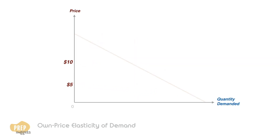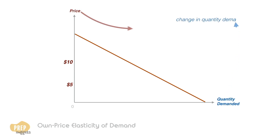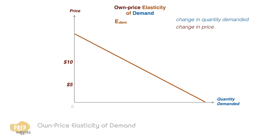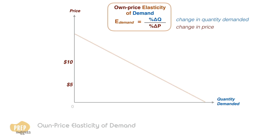Here we introduce a measure to describe the change in quantity demanded when the price changes. The own price elasticity of demand is the percentage change in quantity demanded when the price changes by 1%. When the demand curve is downward sloping, the own price elasticity is negative.